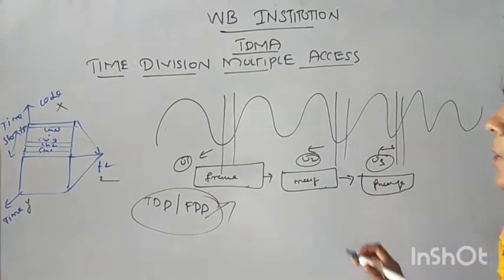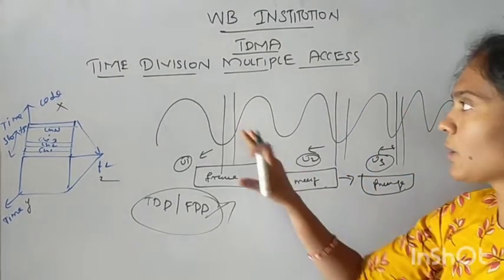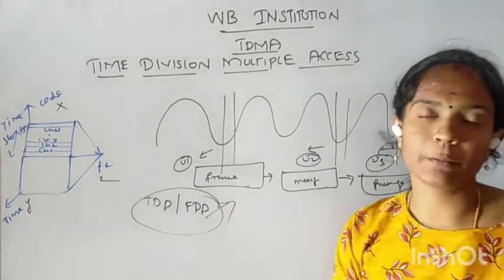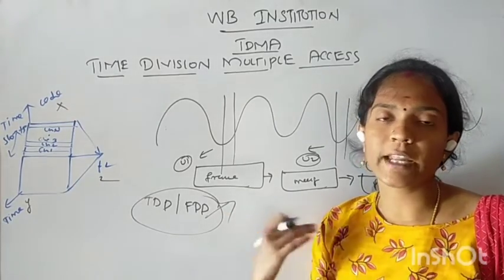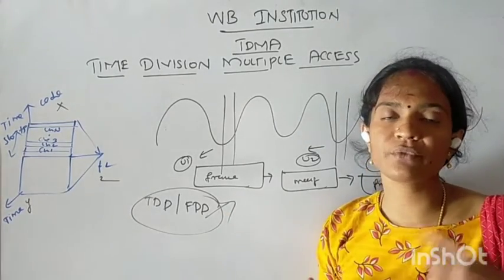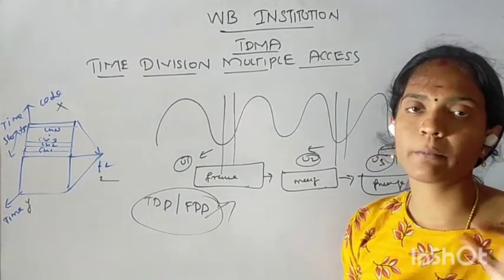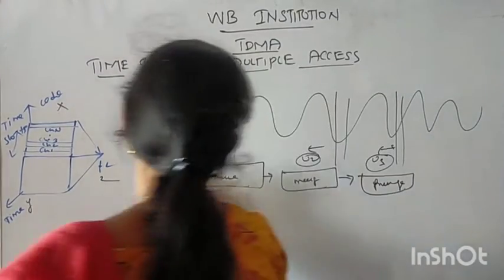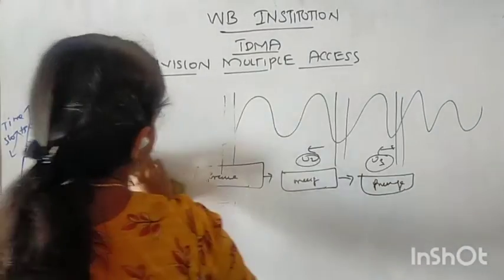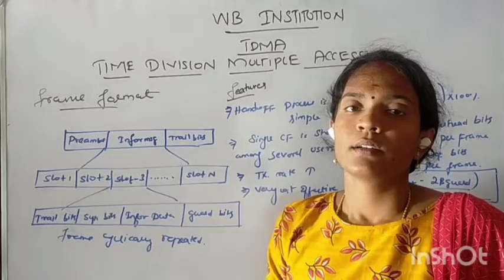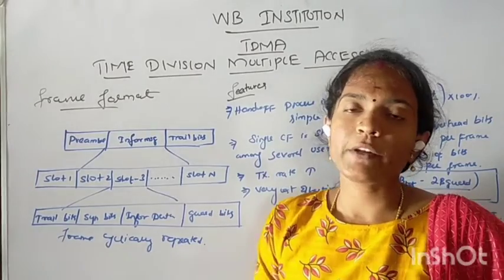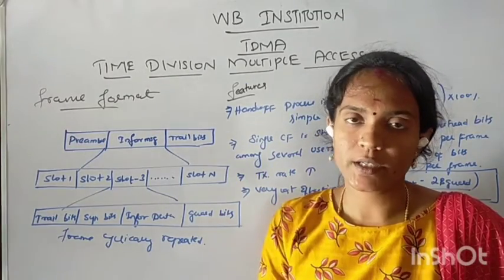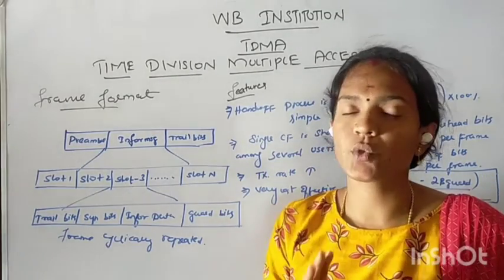It is used for the forward and uplink in the communication system. This is the process of TDMA — time division multiple access. In TDMA, the frame format is used. In the buffer method, TDMA cannot do continuous transmission.